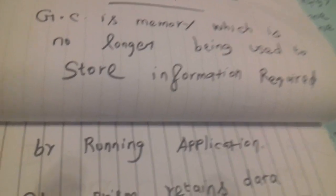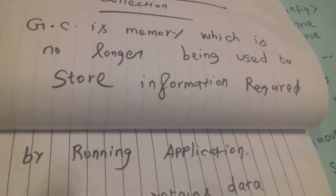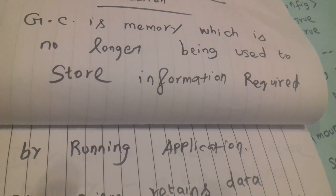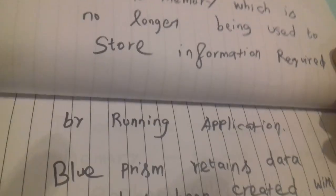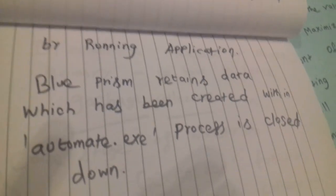It has been triggered by the running application. We already have garbage collection in .NET, the same garbage collection we can use here as well in Blue Prism code stage.